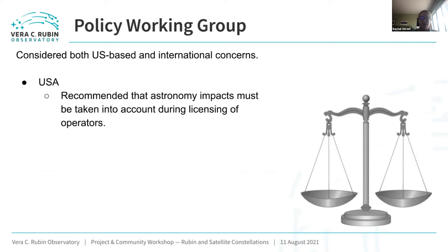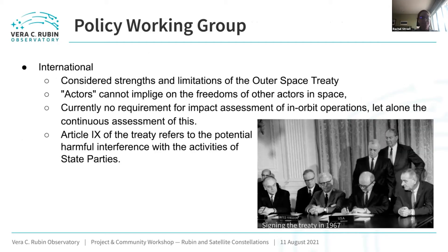The policy working group had the challenge of considering both the US and international legal and political situations. Within the US, they recommended that the impacts on astronomy should be considered before licenses to launch are given to operators. Internationally, the main legal context is the Outer Space Treaty, which includes restrictions that actors cannot impinge on the freedoms of other actors in space. The interpretation of these clauses has yet to be tested with respect to satellite constellations, and there is no mechanism for evaluating the ongoing impacts.